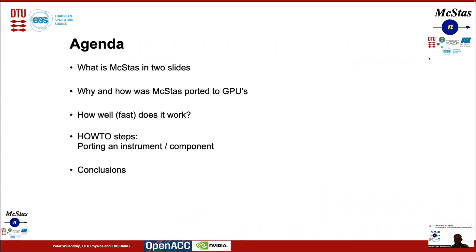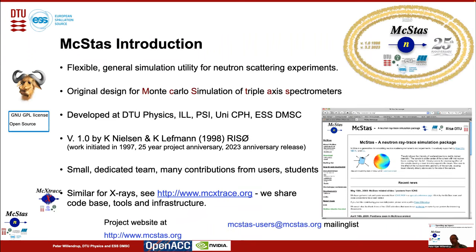I will briefly explain what McStas is, then explain why and how McStas was ported to GPU, report on how fast and how well it works, and show the few steps necessary to port an instrument or component to the GPU. McStas is an approximately 25-year-old code and a flexible general simulation utility for neutron scattering experiments. It's a common effort of DTU, ILL, PSI, University of Copenhagen, and ESS DMSC. We're a small dedicated team, but we've received many contributions from our users worldwide. We have a similar code called McXtrace, and between the two projects we share codebase, tools, and infrastructure.